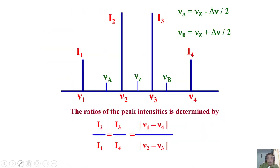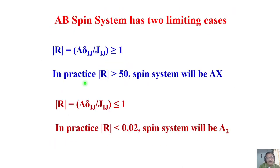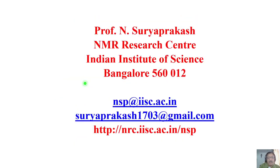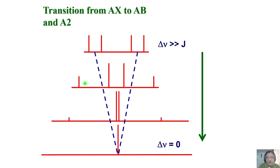The ratio I₂/I₁ is the frequency separation between the two outer lines divided by the frequency separation between the two inner lines. As the chemical shift separation keeps increasing, this ratio becomes smaller and smaller, meaning the inner peaks have more intensity than the outer peaks. I also told you about the roof effect and the limiting case: when the chemical shifts become identical, AB becomes A2 — a two-spin system — and the coupling is not reflected in the spectrum.